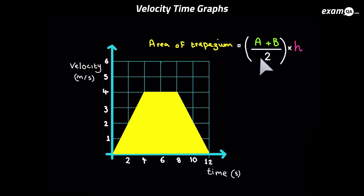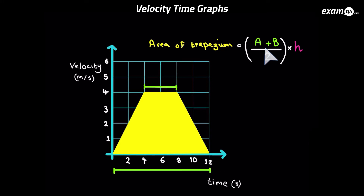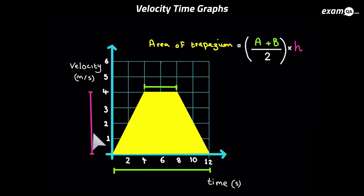So what are A and B in this formula? They are the parallel sides — these two sides here, the sides which are parallel to each other. And H is the perpendicular distance between the parallel sides. So now we can simply fill in that formula.